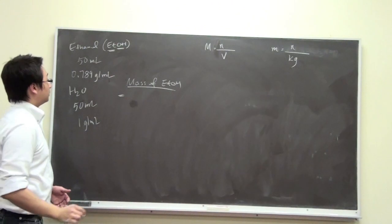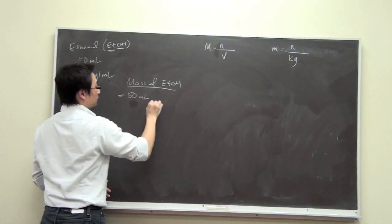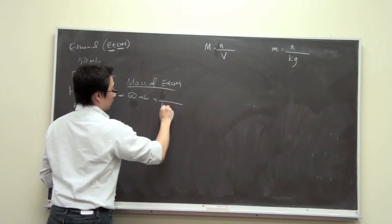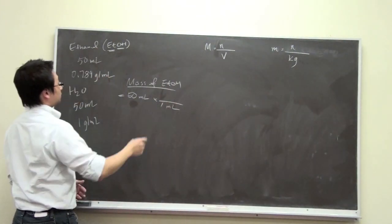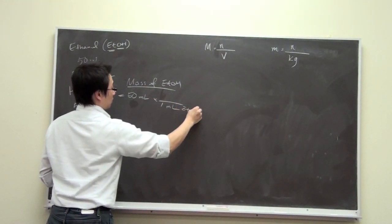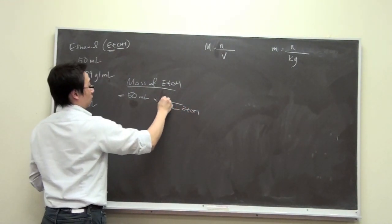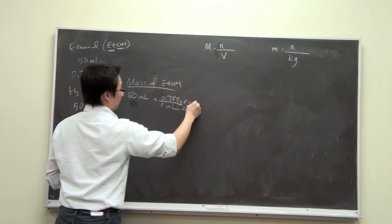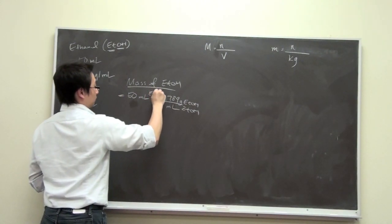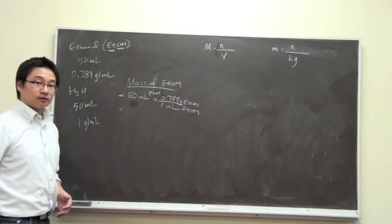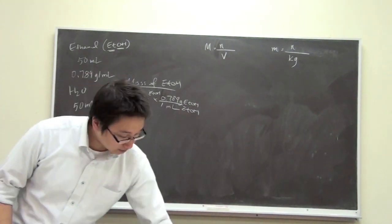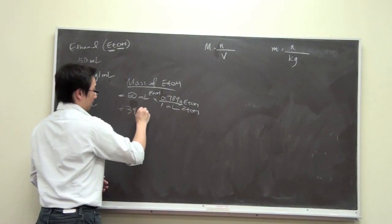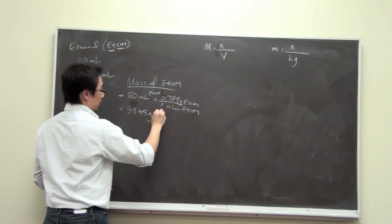The mass of ethanol is equal to 50 ml times the density, which is 0.789 grams of ethanol per ml. Let me just put in ethanol right here, just to make it consistent. And if we use our calculator, we will get 39.45 grams of ethanol.